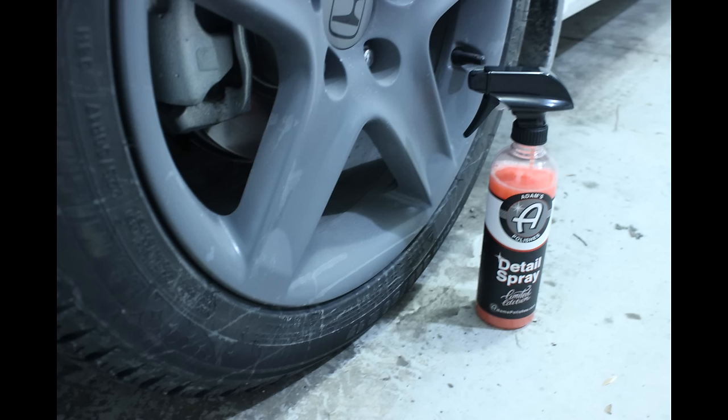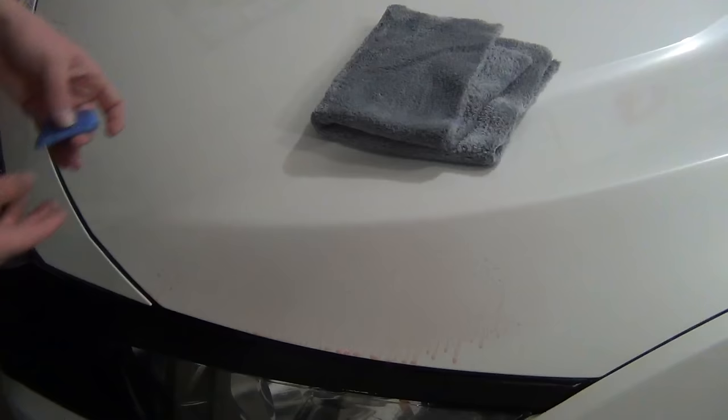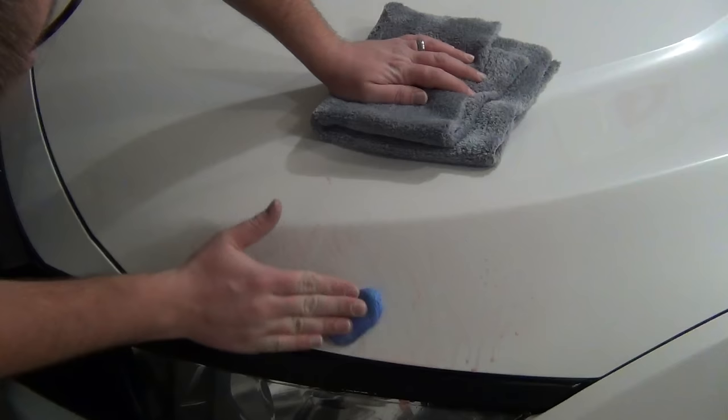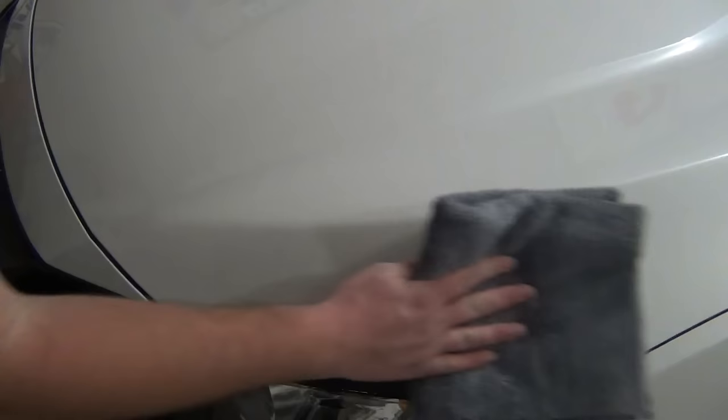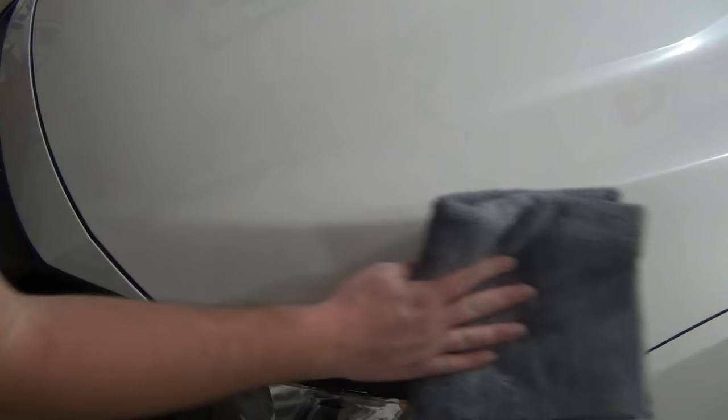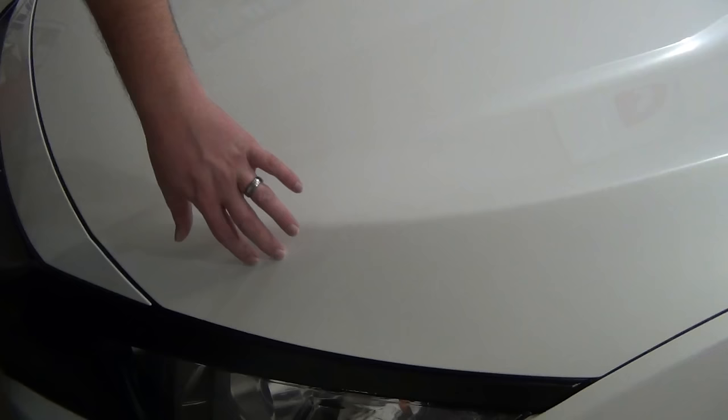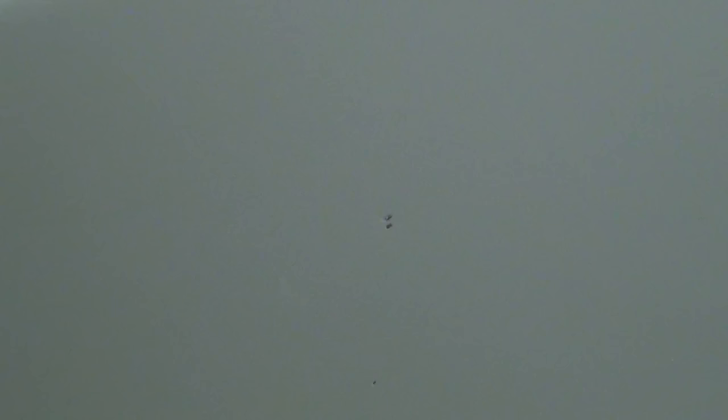First of all, we want to clay the area because I do have wax and sealant on here and I don't want that to interfere with the paint sticking. So I'm going to grab some detail spray and my clay bar and I'll get this clayed real quick. I did clean this area before claying it so that we have a lot less dirt to pick up. So now that we're clayed, we're going to go ahead and go through some steps as to how we're going to fill in these chips to get the best results.